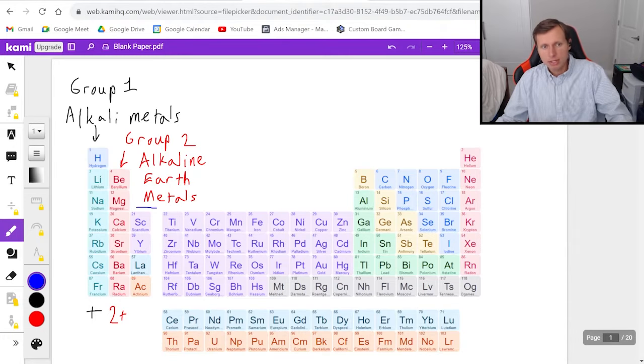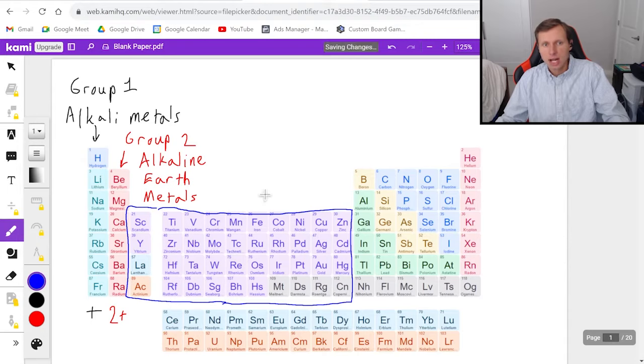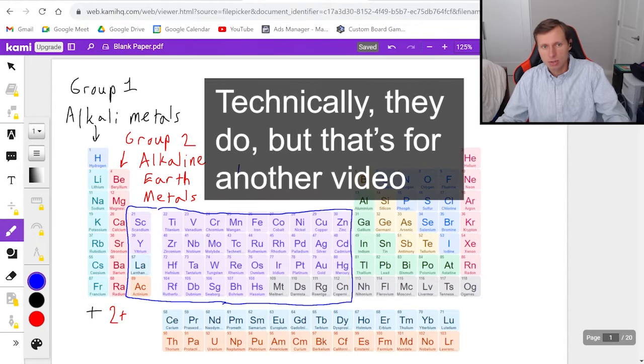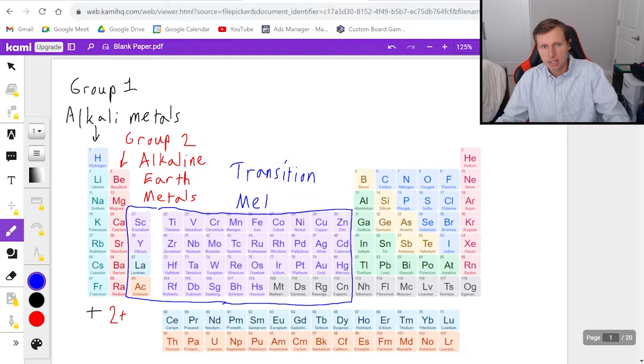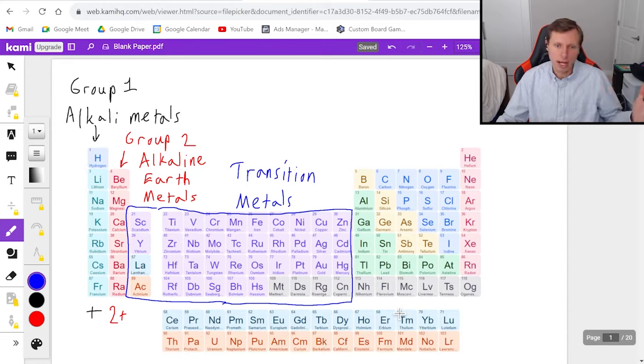But now with this middle section, with the transition metals, this is where things start to break down. This does not have a group name. We just call them the transition metals. And unlike group one or group two, these guys can have a bunch of different ion forms. For instance, they can be one plus, two plus, three plus, four plus. There's a lot of variation. It's very annoying. So most of the time in the problem, they'll have to tell you what the charge is.